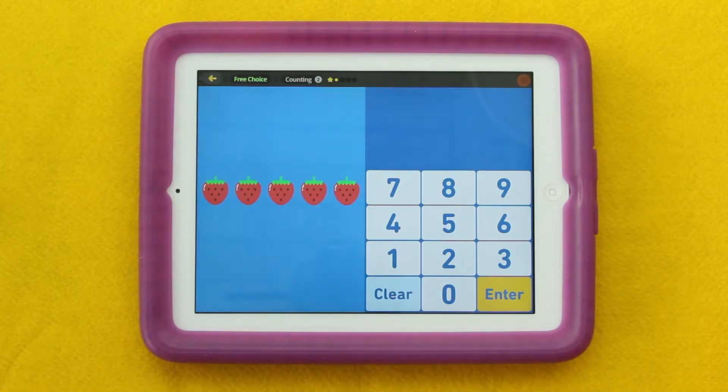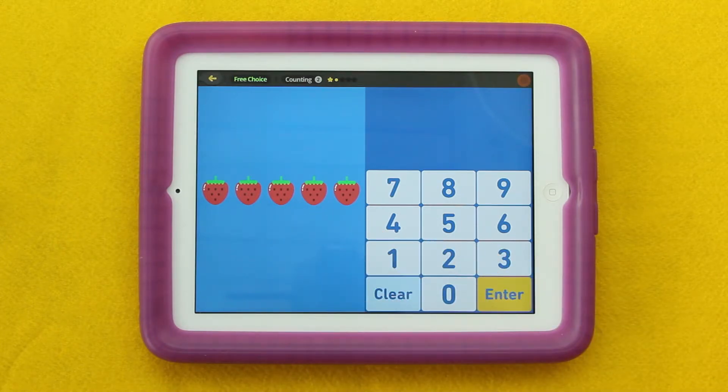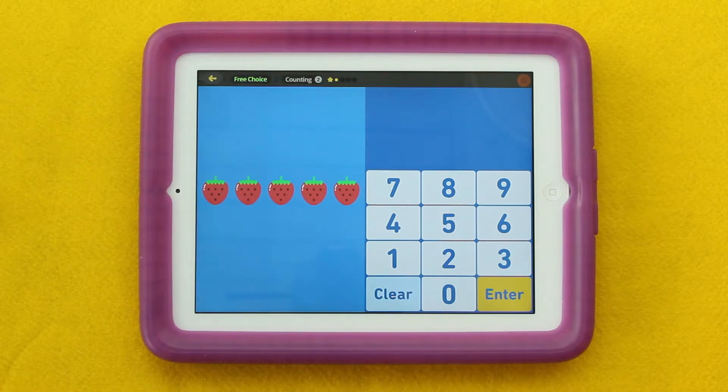Who would like to share what they notice? Some students might share that they see strawberries. They might note the different colors they see on the screen, notice the keypad over here with numbers, or they might already know the number of strawberries that are in a row. Some students might say I see five strawberries or five fruit.